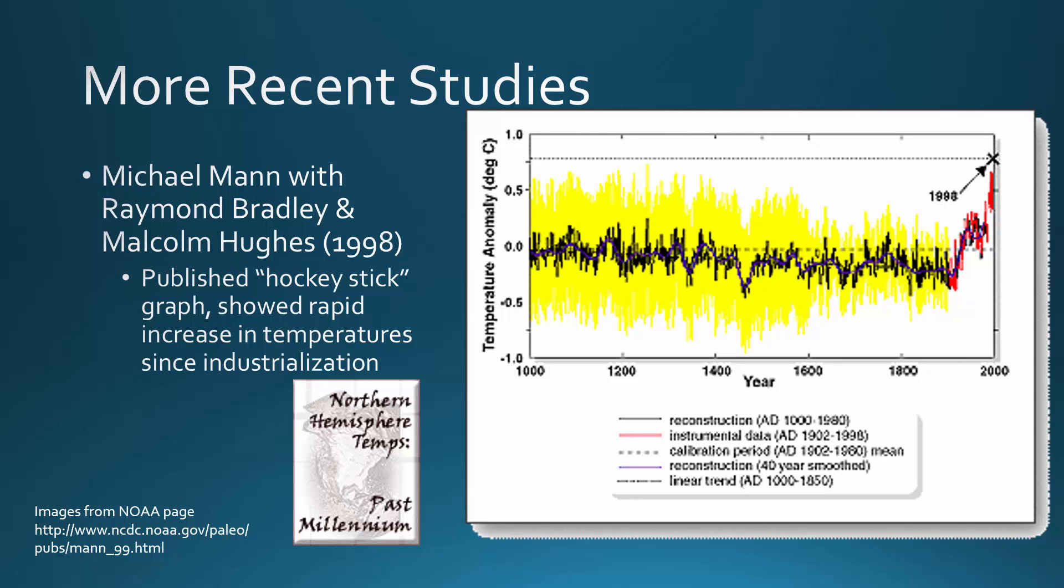Their study is fairly famous. It was controversial at the time. It's often now referred to as the hockey stick graph that they published. It's called the hockey stick graph because it shows that over the last 1,000 years, the temperature was fairly steady.